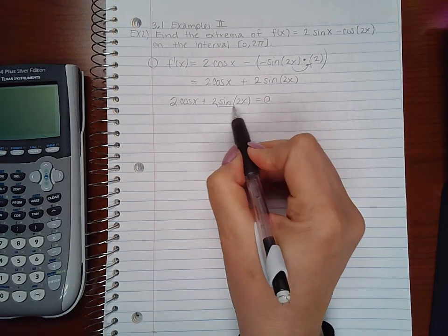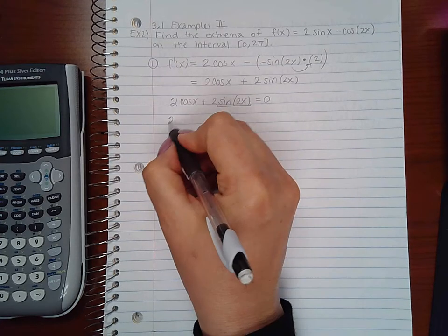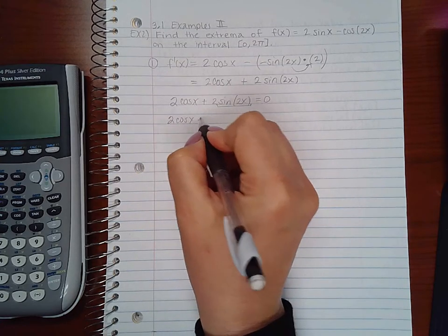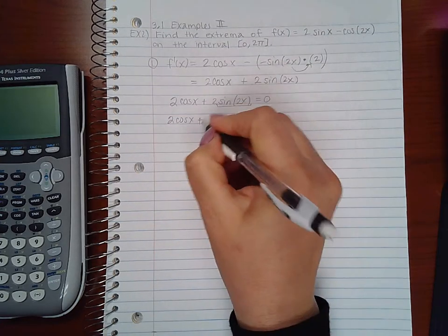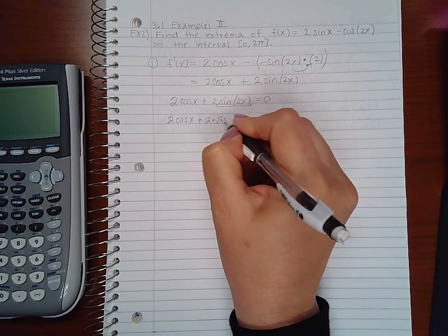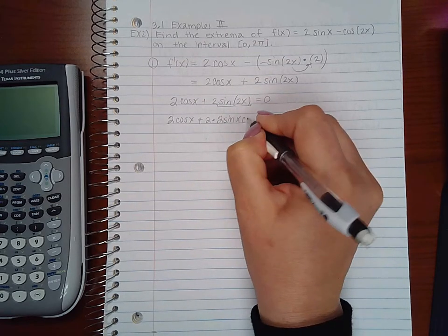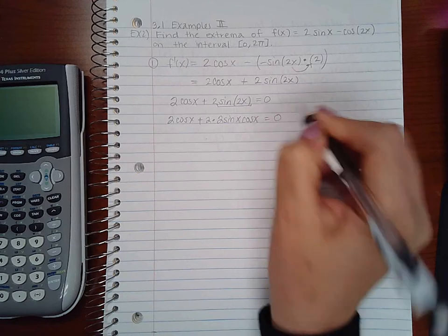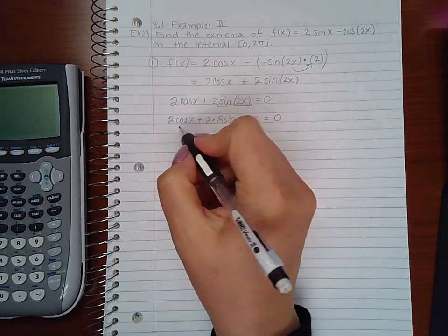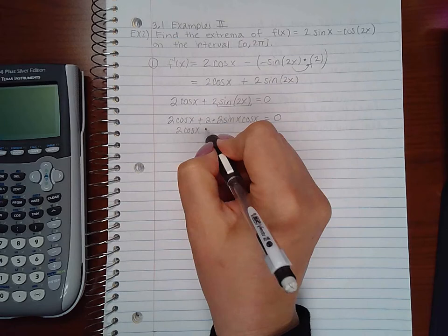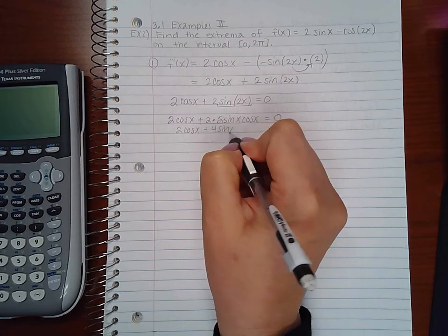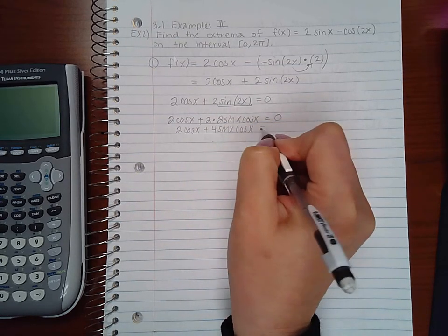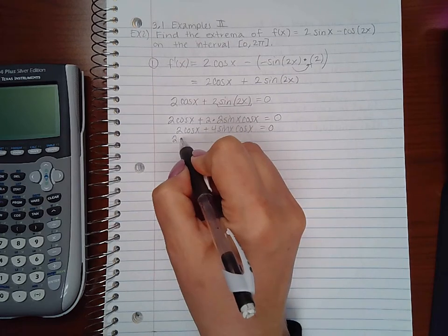So I am going to use a trigonometric identity here. I know that sine of 2x is 2sin(x)cos(x) so that now we are all talking about the same angle. And then I notice that I can factor out a 2cos(x) from both of those terms.